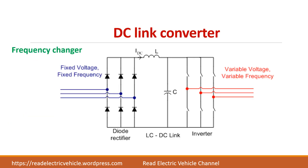The DC link converter is also called a frequency changer. If you give an AC voltage of some frequency, it will be converted into DC by the diode bridge rectifier, and again this DC voltage can be converted into AC using an inverter. The difference is that frequency conversion takes place in two stages — AC to DC, and DC back to AC — whereas in a cycloconverter there is direct conversion from one frequency to another in one stage.